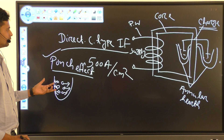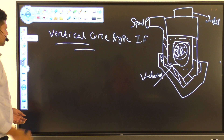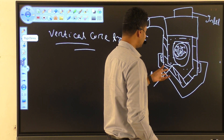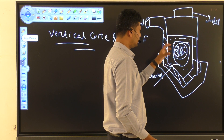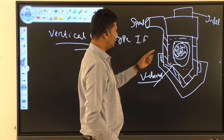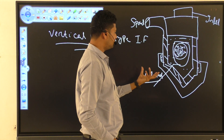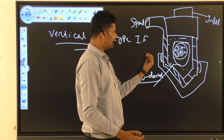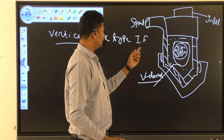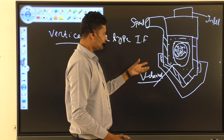This overflow is the biggest demerit of the direct core type induction furnace. Now let's discuss the vertical core type induction furnace. In this furnace, the charge is melted in a V-channel. The charge is input through an inlet and extracted through a spout. A key benefit is that the furnace can be tilted for easy pouring or extraction of the molten metal, and this tilting process is done hydraulically.